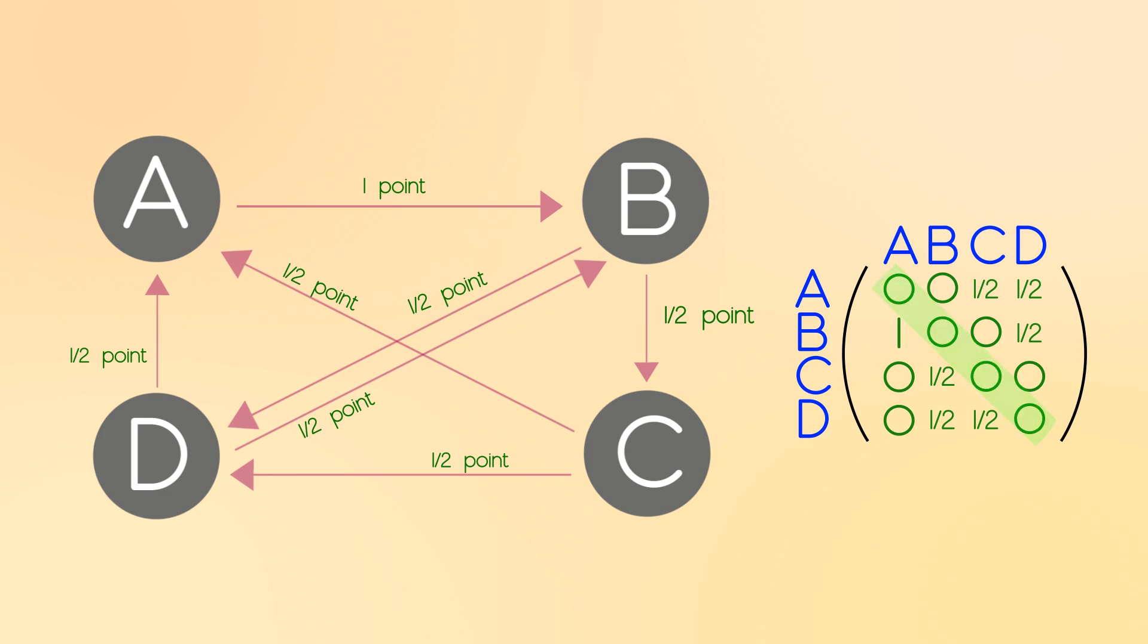Notice that the diagonal will always have zeros because you can't link to yourself, and you'll also notice that each column adds to one, since each site can only give out one point in total.